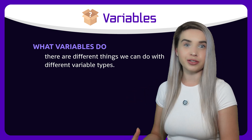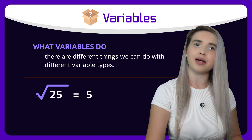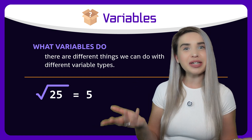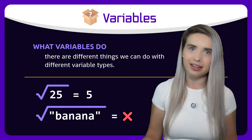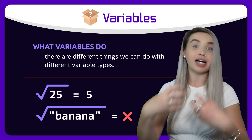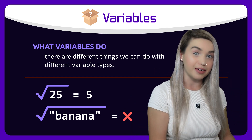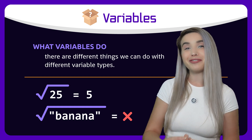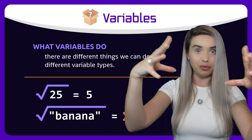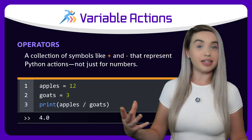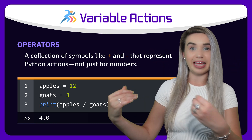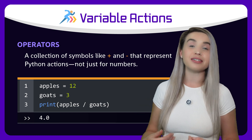Well, there are things we can do with integers that we can't really do with strings. For example, we all know that the square root of 25 is 5. But how are we supposed to know the square root of banana? It just doesn't make any sense. That's why we have different kinds of actions associated with different kinds of data. One category of actions is called operators, where operators are a collection of symbols like plus and minus, designed to work with different kinds of data.